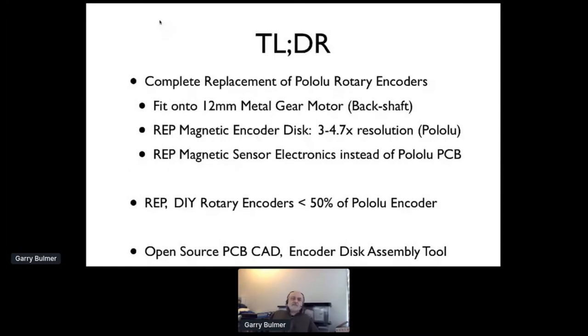Too long, didn't read. The purpose of the project is to completely replace Pololu Rotary Encoders. These things fit onto the back of 12mm metal gear motors. They have an extra double shaft, a back shaft out of the motor.